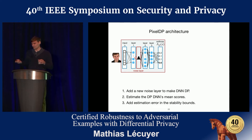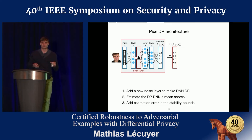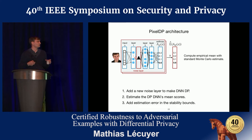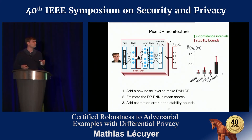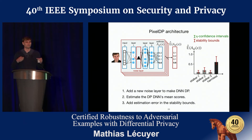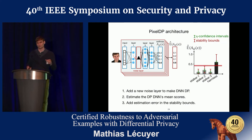We also need to compute the expected output of the neural net. Because of the complex post-processing, we can't do that analytically, so we use a standard Monte Carlo estimate — running the model many times and computing the average. Since this is not the true expectation, we add confidence intervals bounding where the true expectation lies with high probability, include that in our bounds, and if they still don't overlap, we prove the prediction is robust.